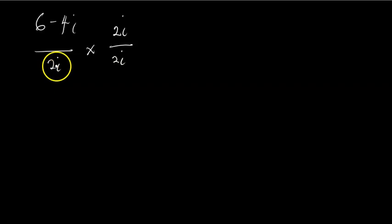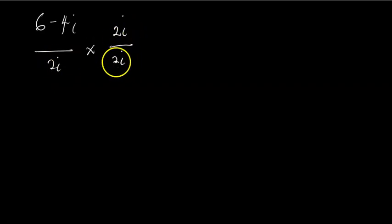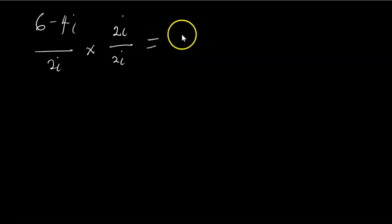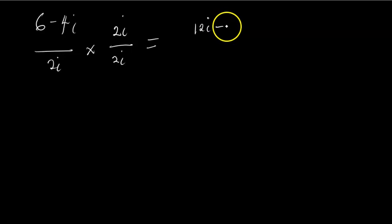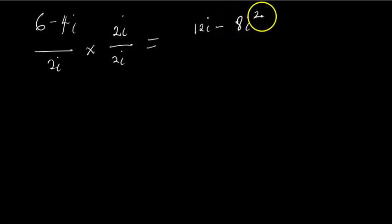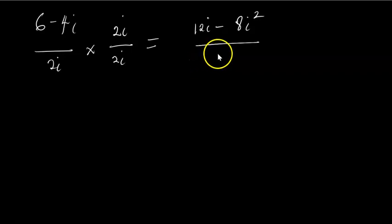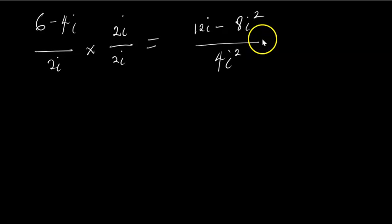This way I've only multiplied the whole expression by one, since 2i divided by 2i is the same thing as one. So this will be the same thing as 6 × 2i, which is 12i, minus 4 × 2i, which is 8i², over 2 × 2i in the denominator, which is 4i².